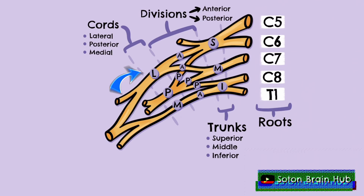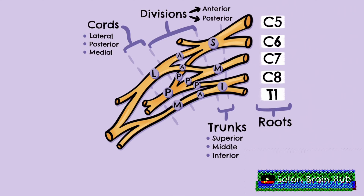The remaining anterior division of the inferior trunk forms the medial cord by itself. The naming of the posterior, lateral and medial cords are made in relation to their position to the axillary artery.